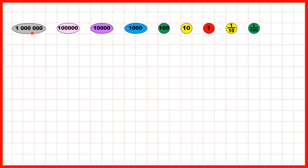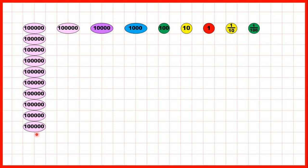We can always exchange any counter for 10 counters from the place value to the right. So we could exchange our million counter for 10 hundred thousands counters, because 10 hundred thousands has the same value as one million.